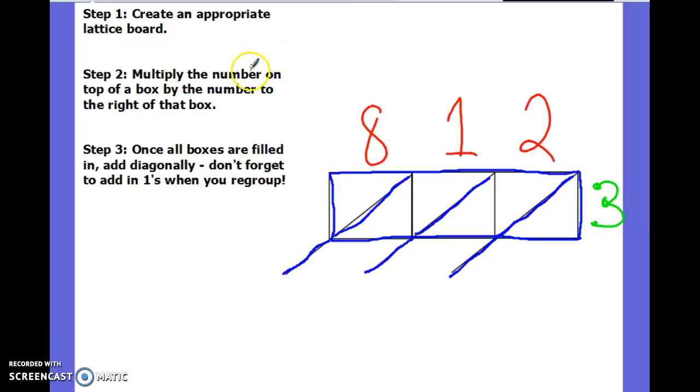Step 2 says multiply the numbers on top of the box, the 8, 1, and 2, by the number on the right side of the box. Again, I'm lucky because here's my 3, and I like skip counting by 3. So let's go ahead and do that. First, I'm going to do the 3 times the 2. 3, 6, I'm done. Now, because it is a single-digit number, that doesn't mean that I can just put one digit in these boxes. I have to fill every single box. So this is 0, and this is 6. Then 3 times 1 is 3. So it's 0, 3.